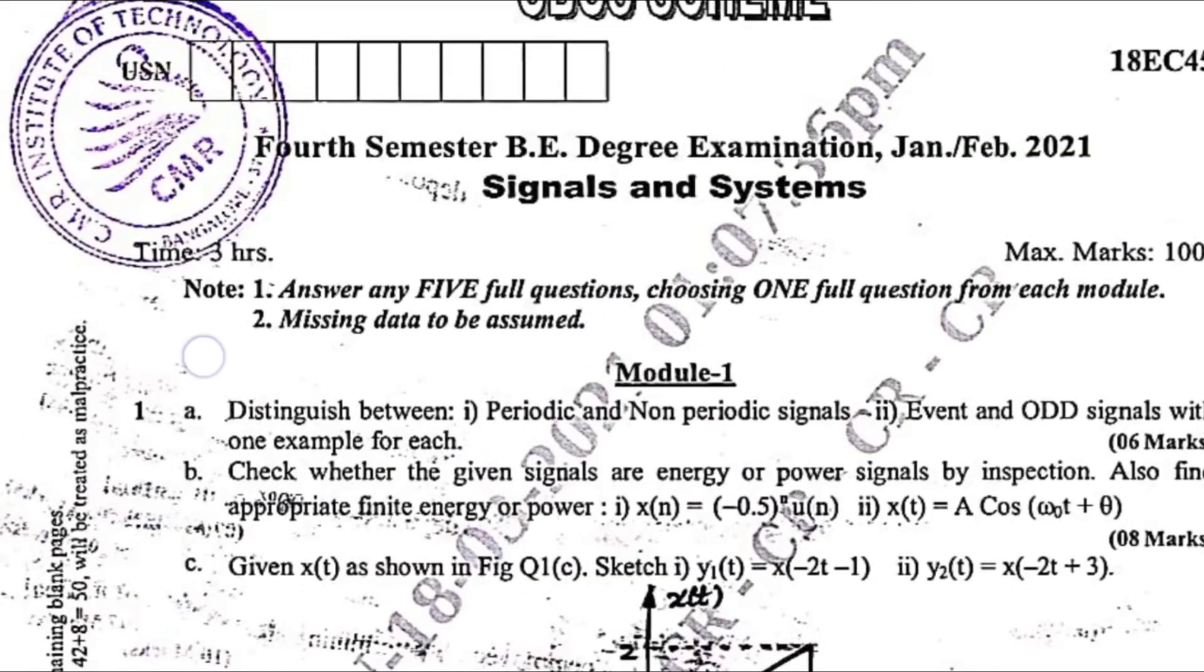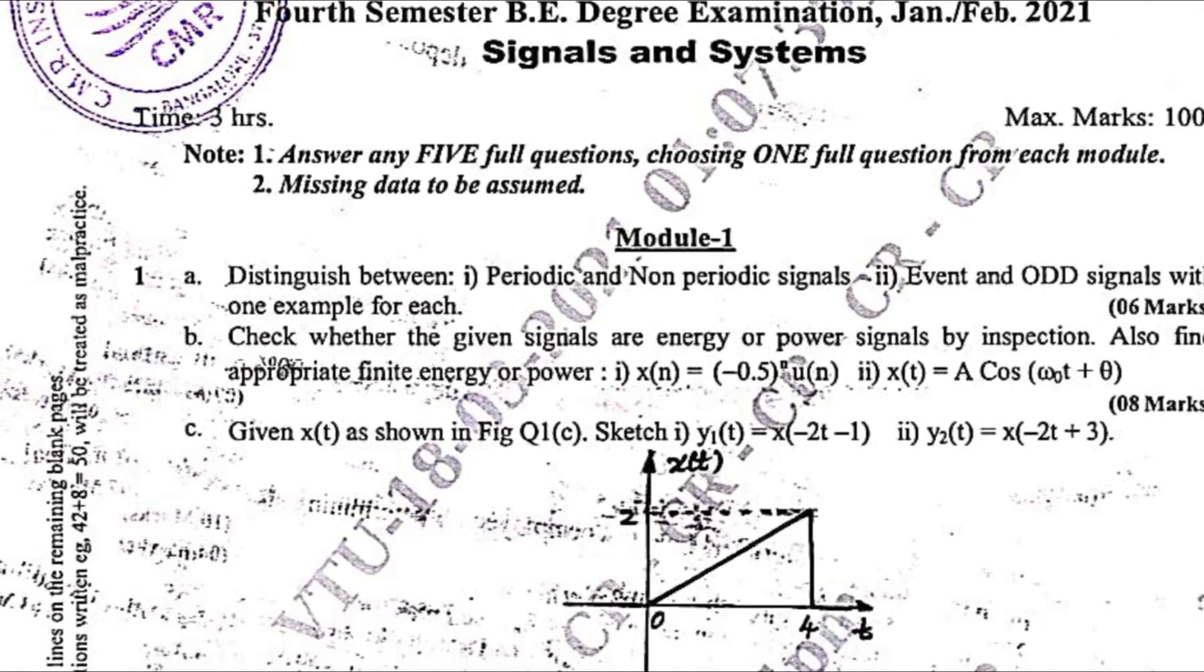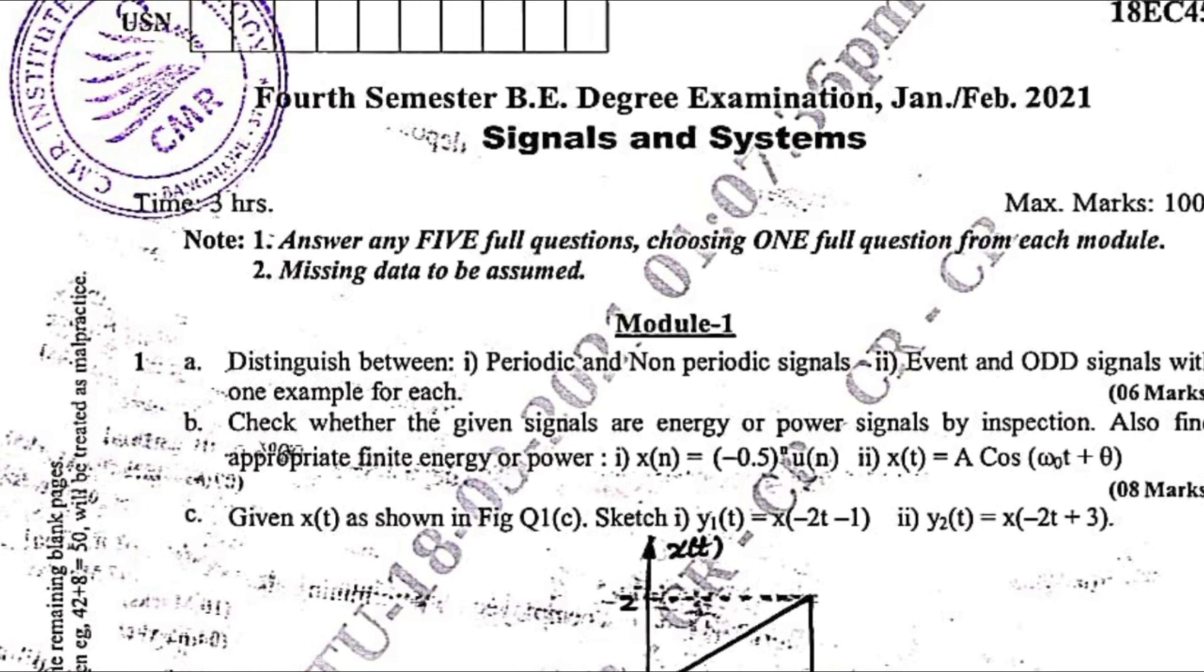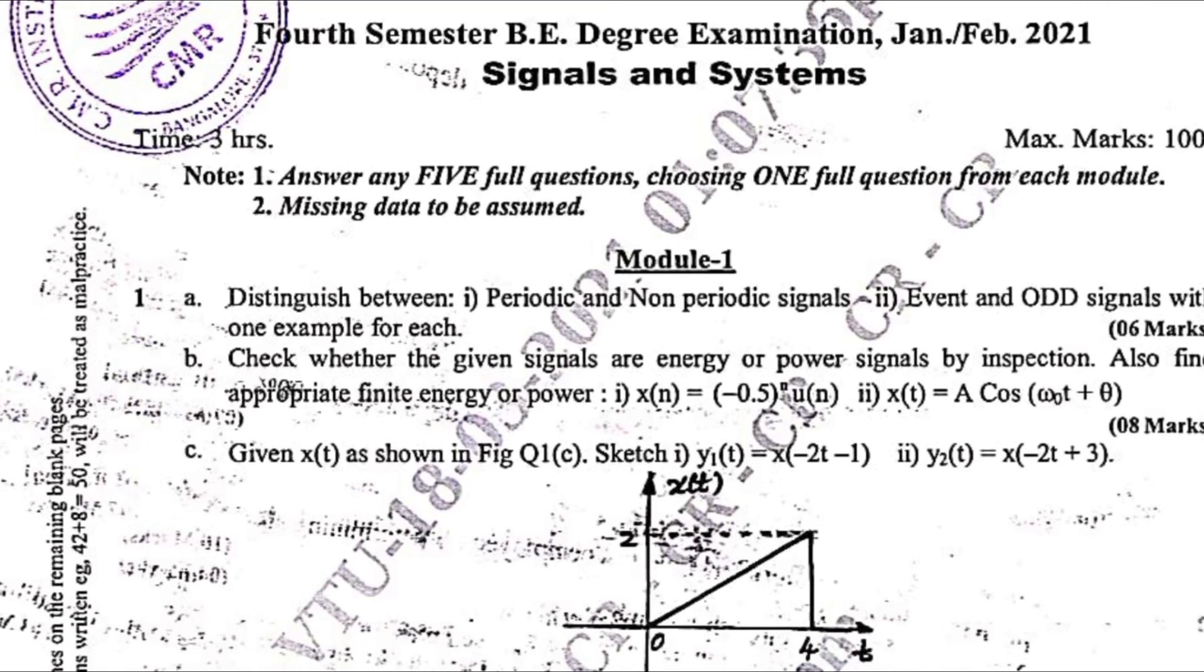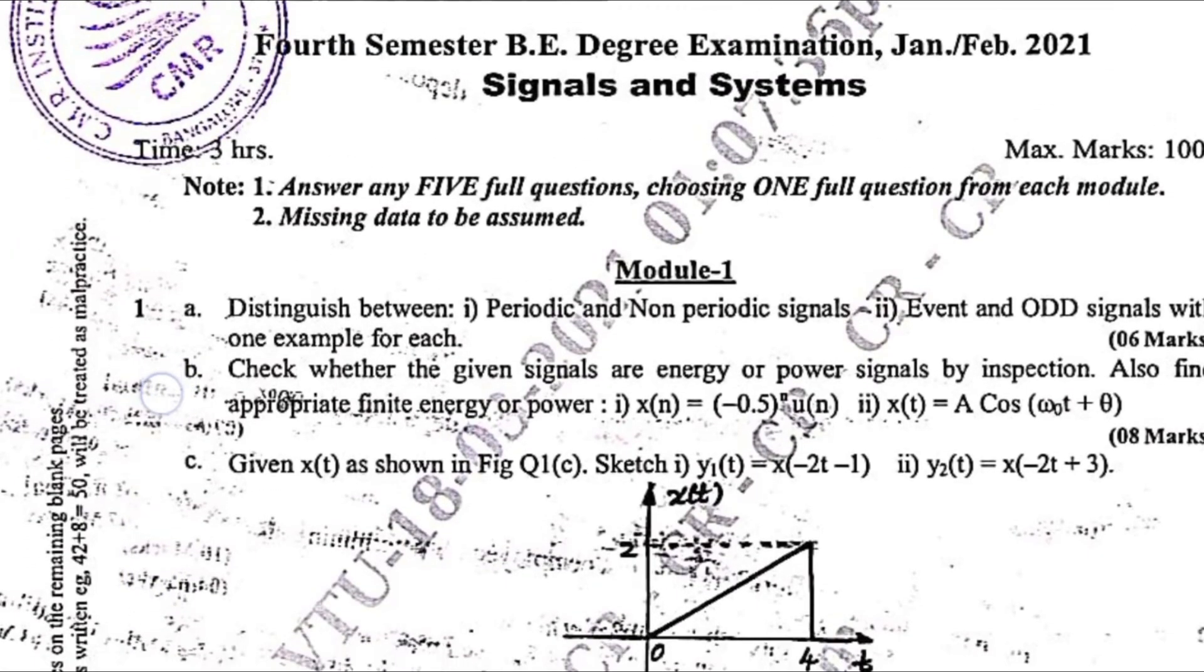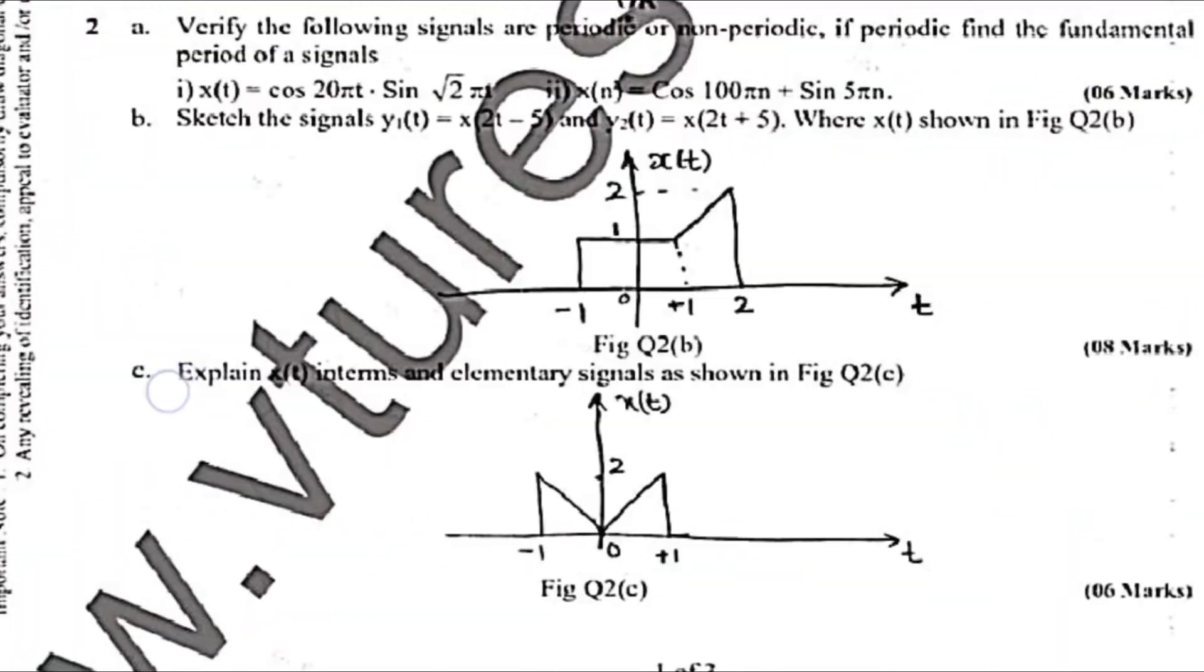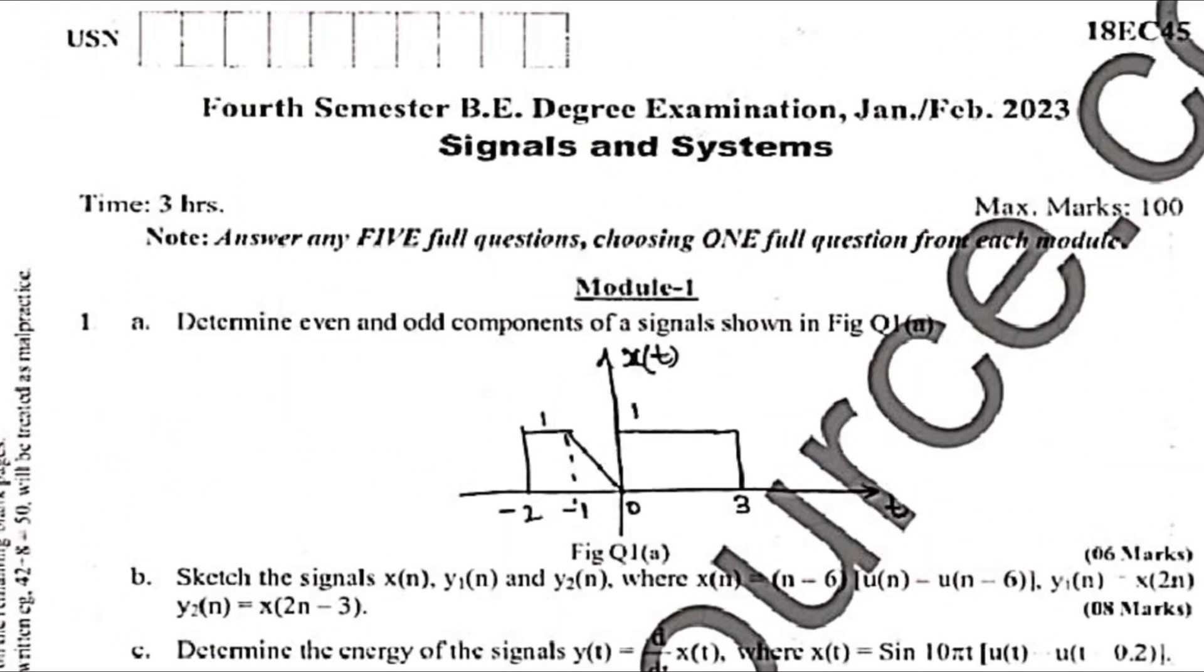And from this signals and systems, you have to only refer module first. As far as this signals and systems are concerned, you have to only refer module one. Only go through module one of signals and systems. Rest of the topics you can go through digital signal processing of 18 scheme and 21 scheme. These are some papers of the signals and systems which you can refer.